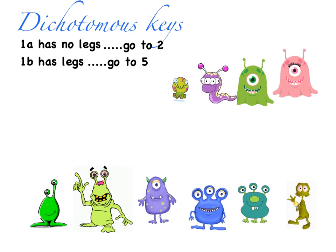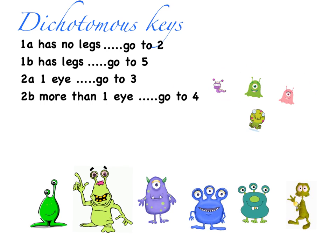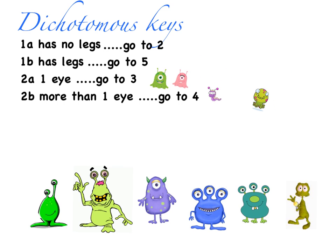Now I'm ready to look at two. I need to figure out a way to subdivide these by looking for characteristics that two of them share. I could do it by color — green or not green — but I'm going to do it by eyes: one-eyed or more than one eye. So two has divided those with one eye from those with more than one eye.